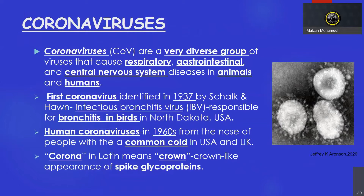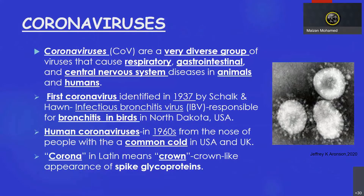Coronaviruses are a very diverse and large group of viruses that cause respiratory, gastrointestinal, and central nervous system disease in animals and humans. The first coronavirus was identified in 1937 in chickens by Short and Horn, named as infectious bronchitis virus, which was responsible for bronchitis in Dakota, USA.